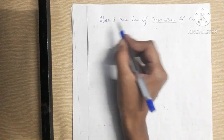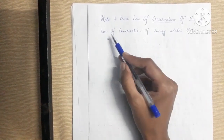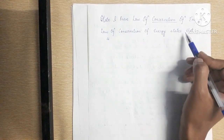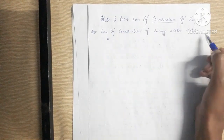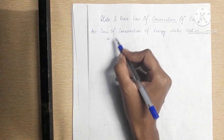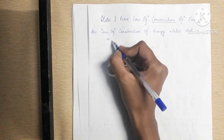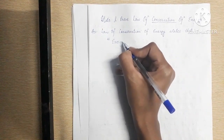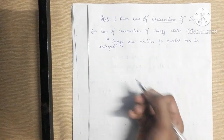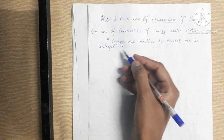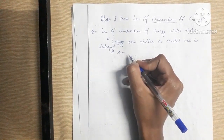So first, we have to state the law. We will write: 'Law of conservation of energy states that:' — then we write the law in inverted commas. The law states: 'Energy can neither be created nor be destroyed.'